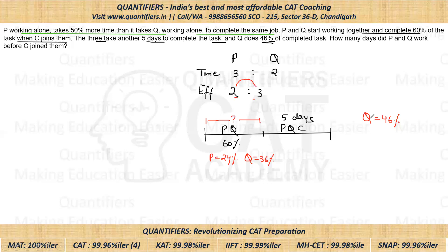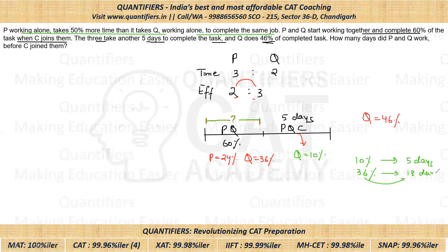We know that Q is doing a total of 46%. That means in the last five days, Q must have done 10% of the total work. We just need to find how many days Q was working before C joined. Q does 10% of the total work in five days, so for 36% of the work: since 5 is half of 10, Q must have taken 18 days. So initially, when P and Q worked together, they must have worked for 18 days. That's the answer — 18.